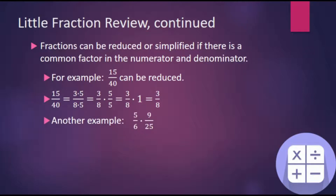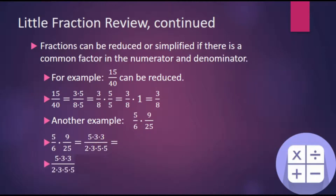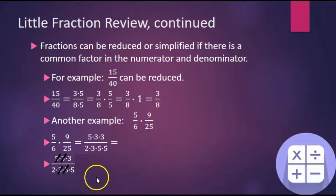Here's another example of multiplying two fractions together. Instead of multiplying right away, we break down 9 into its prime factors of 3 times 3. Likewise, in the denominator, 6 can be replaced with 2 times 3, and 25 with 5 times 5. Then we cancel out common factors: since 3 over 3 equals 1, and we have a 5 in the numerator and a factor of 5 in the denominator, 5 over 5 equals 1, leaving a 3 in the numerator and 2 times 5 — or 10 — in the denominator.